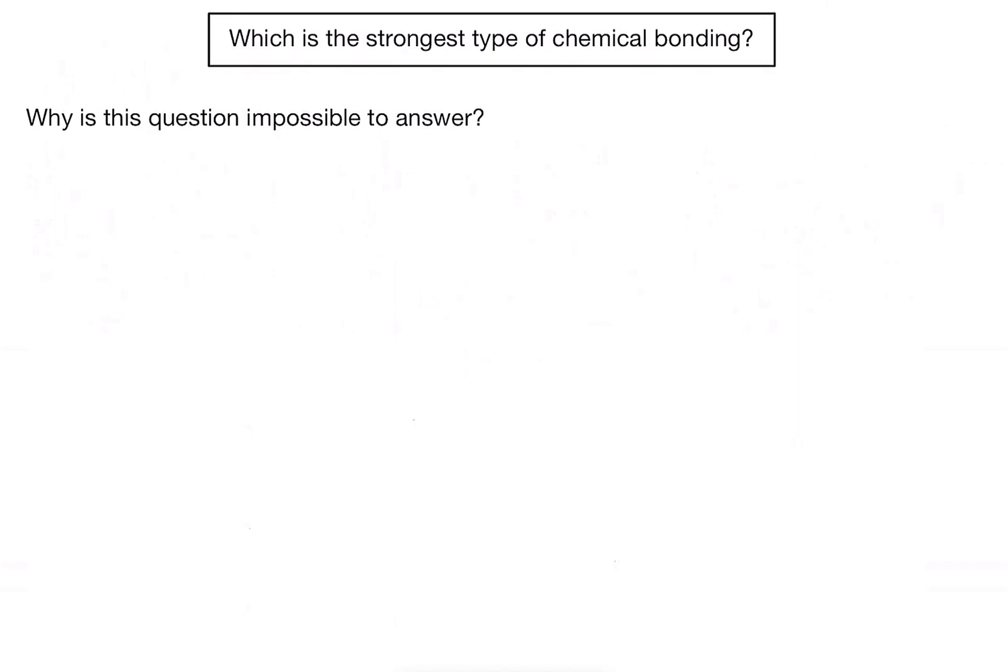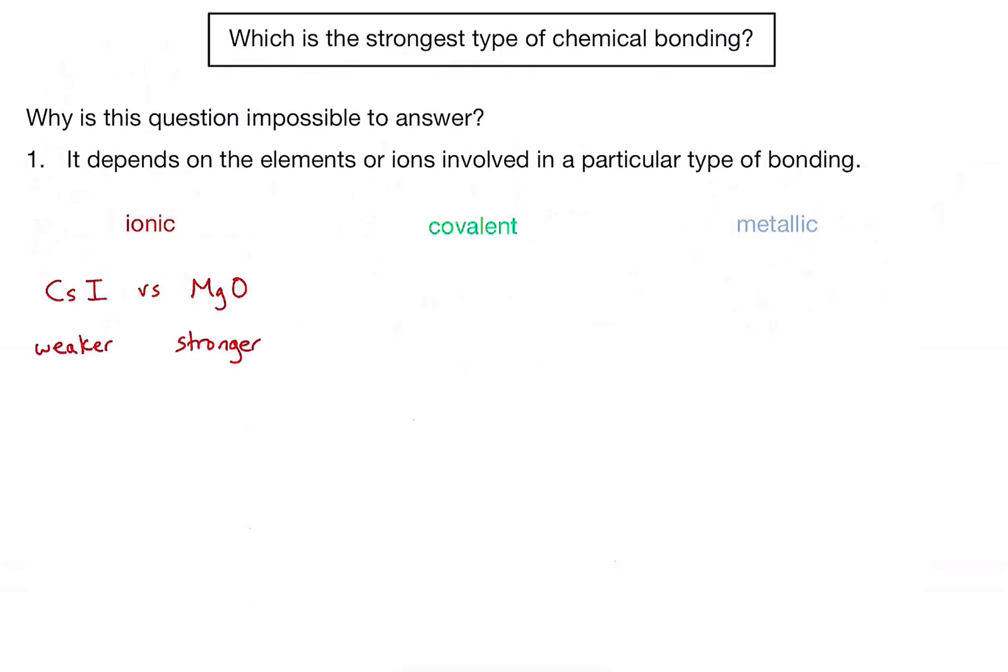And the first reason is simply because it depends on the elements or ions involved in a particular type of bonding. So if I consider the three main types of bonding - ionic, covalent and metallic - and look at a couple of examples in each, for example in ionic, I might compare caesium iodide and magnesium oxide and the strength of the ionic bonding in those. And actually find there's a huge difference. Caesium iodide has considerably weaker ionic bonding compared to magnesium oxide. So we can't simply say that all ionic bonds are the same strength.